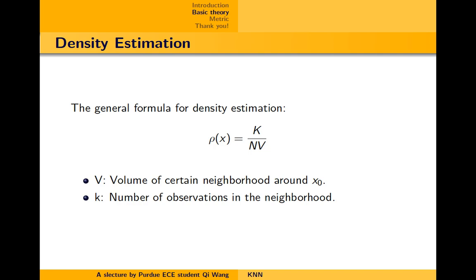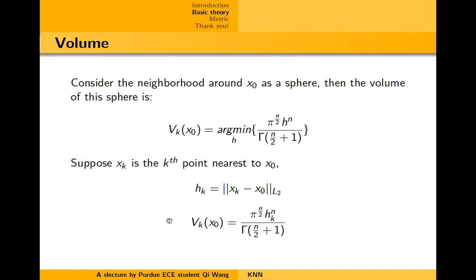And the general formula for the density estimation is like this. The ρ of x is equal to k, which is the predetermined parameter, over n times V. The V here is the volume of some neighborhood around x, and k denotes the number of observations in the neighborhood. Then consider the neighborhood around x₀ as a sphere. Then the volume can be calculated like this. While x_k is the k-th point nearest to x₀.